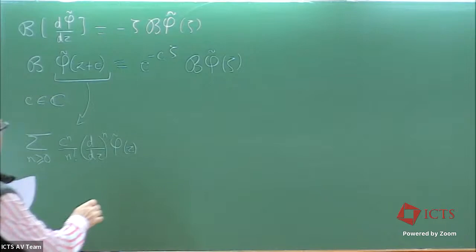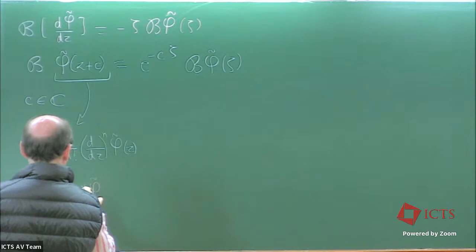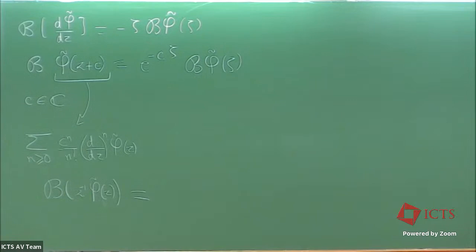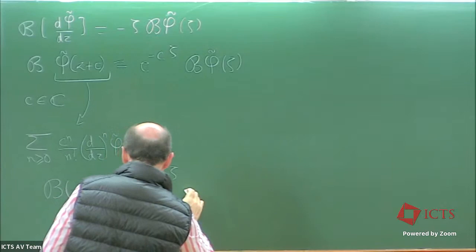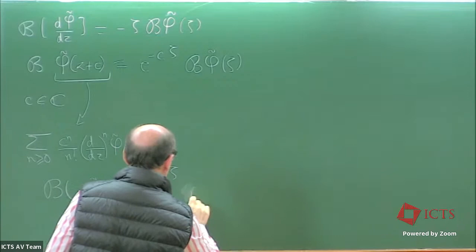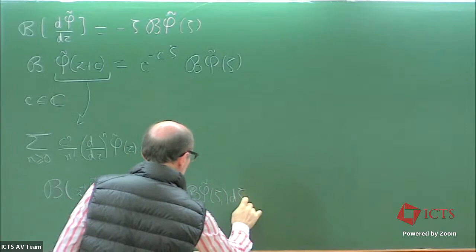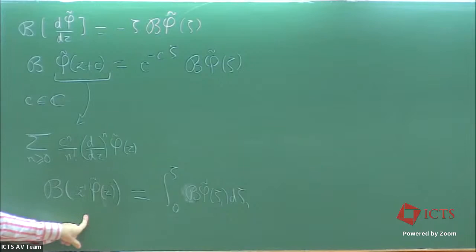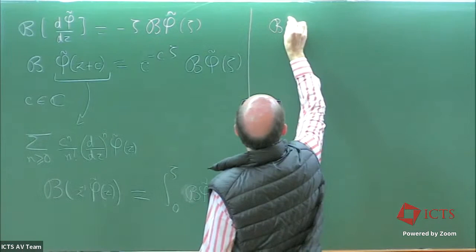What about multiplication by z? The Borel counterpart is integration from zero — you compute the primitive which vanishes at the origin of the Borel transform. And if you have a constant term, it works because you interpret it as a distribution; the integral is well-defined. You find zero, as it should be, because this function has no constant term. More generally, this is a multiplication. Very important: what is the Borel transform of a product?